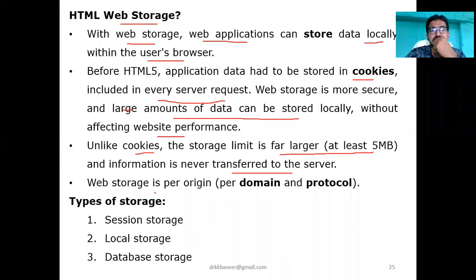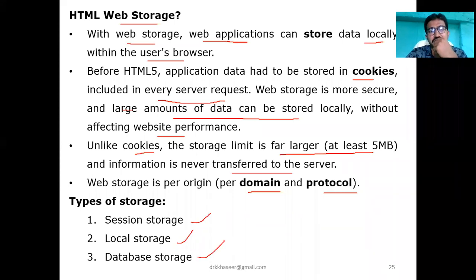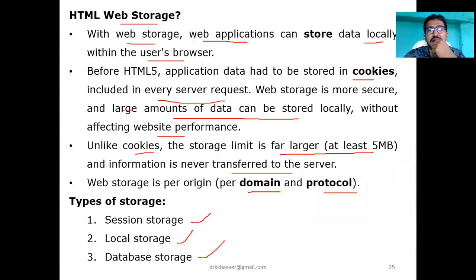Web storage is per origin - per domain, per protocol. It depends on the domain you are using, whether .com, .co.in, or .edu, and the protocol whether FTP, HTTP, or HTTPS - that doesn't matter for web storage. Web storage consists of three different types: the first one is session storage, the second one is local storage, and the third one is database storage. These are the three different experiments we are going to be doing in week two.